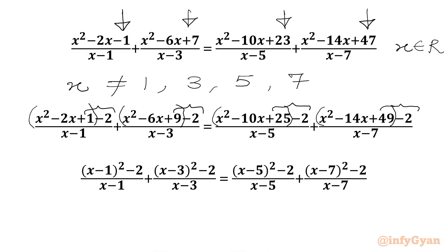So we can write: (x minus 1) whole square minus 2 over (x minus 1), plus (x minus 3) whole square minus 2 over (x minus 3), plus (x minus 5) whole square minus 2 over (x minus 5), plus (x minus 7) whole square minus 2 over (x minus 7).